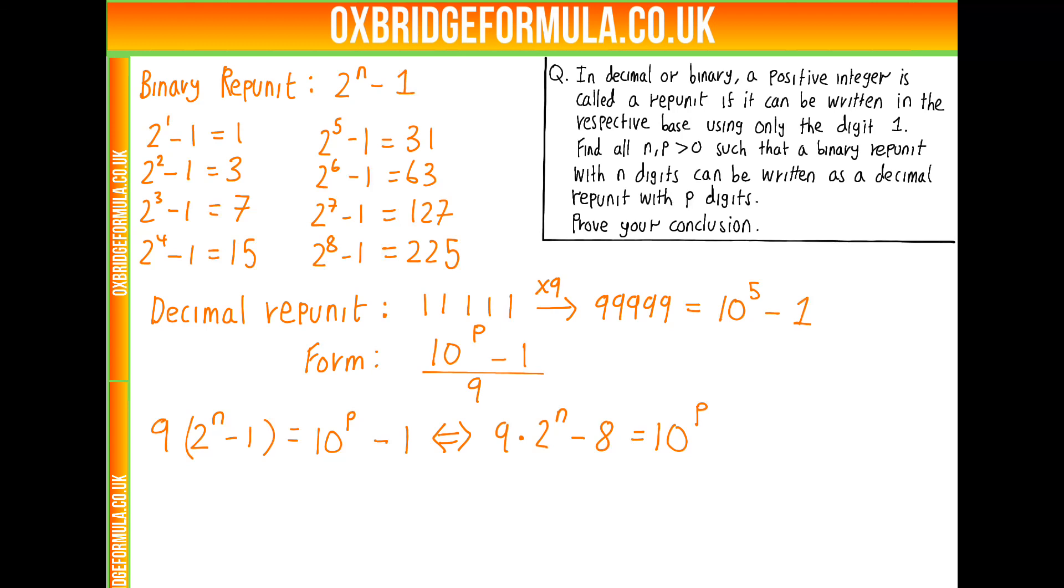What we're essentially going to do in formal terms is take mod 16 of this. But what that means in more elementary terms is if n was 4 or bigger, then 2 to the n would be a multiple of 16. And if p was 4 or bigger, this would be a multiple of 16. So this is a multiple of 16 for p greater than or equal to 4, and this is a multiple of 16 for n greater than or equal to 4. But if we've got a multiple of 16 minus 8, then that's not a multiple of 16. So for n greater than or equal to 4 and p greater than or equal to 4, we can't possibly have a solution to this.